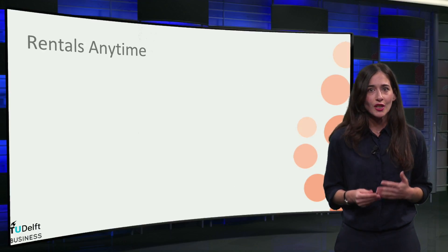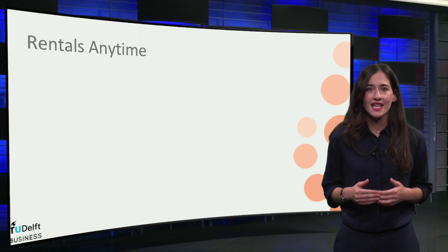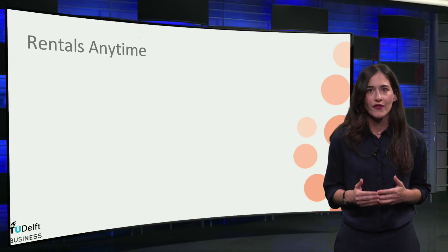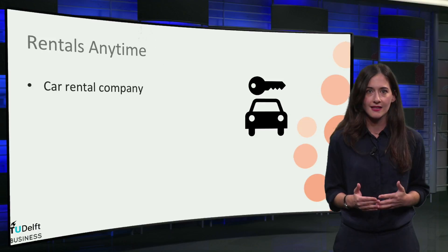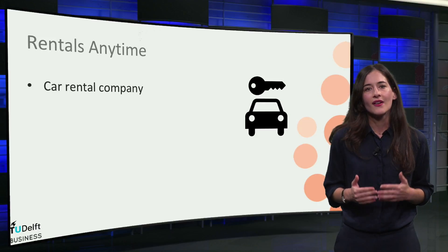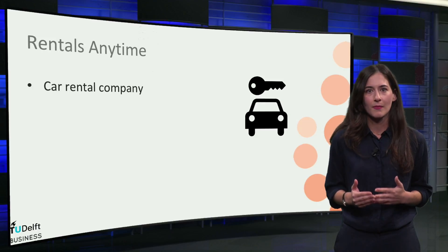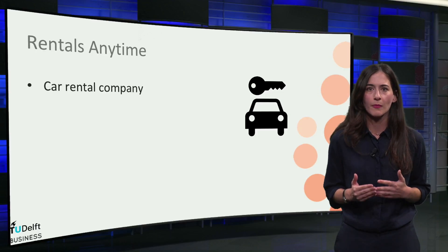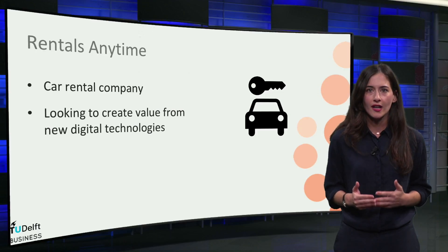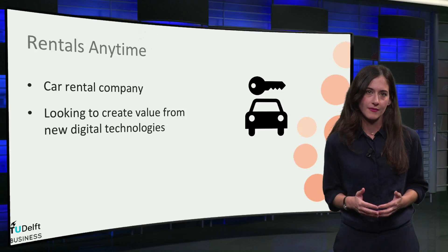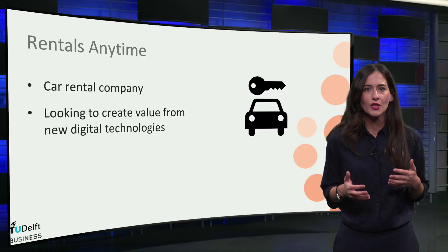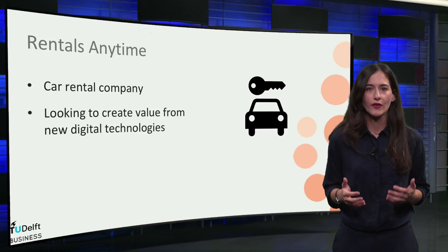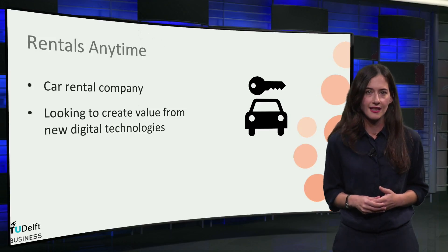So, how are you going to do this? In the case assignment, you will be asked to perform a business model transformation for Reynolds Anytime. Reynolds Anytime is a company that is trying to keep an advantage over its competitors through creating value from new digital technologies. By using the Omega Business Model Tool, you will learn how to explore and innovate the business model of Reynolds Anytime.